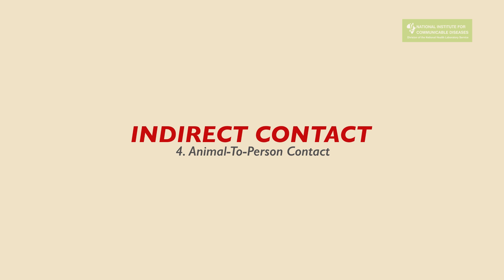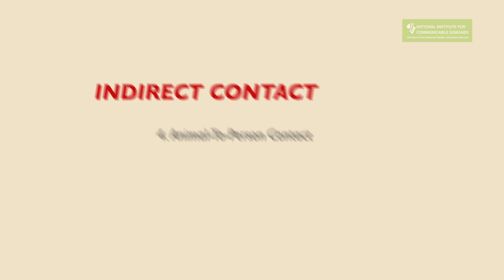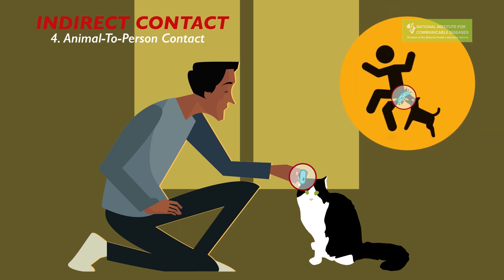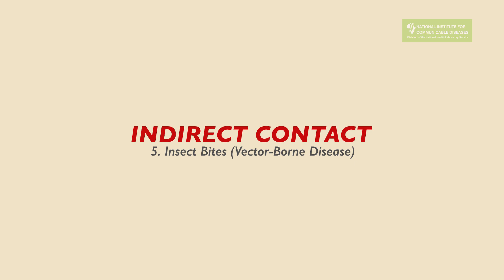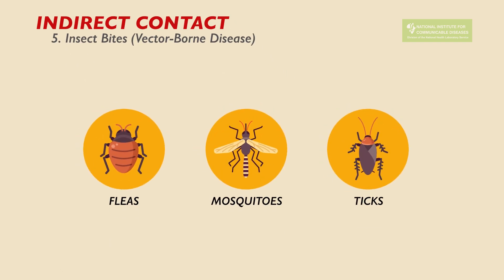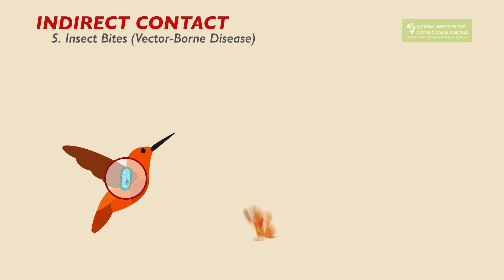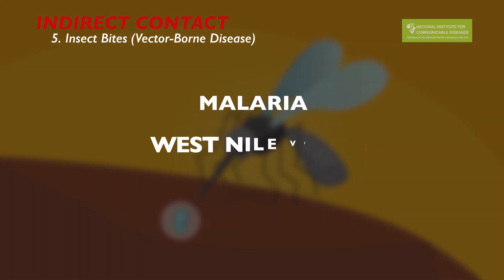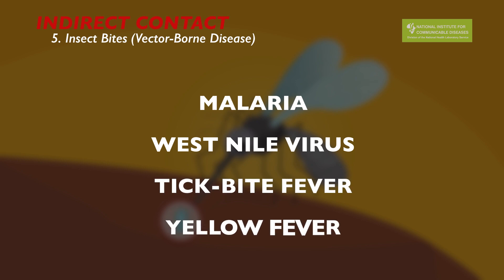Animal-to-person contact: some infectious diseases can be transmitted from an animal to a person. This can happen when an infected animal bites or scratches you, or when you handle cat waste. Some zoonotic infectious agents are transmitted by insects, especially those that suck blood. These include mosquitoes, fleas, and ticks. The insects become infected when they feed on infected hosts such as birds, animals, and humans. The disease is then transmitted when the insect bites a new host. Malaria, West Nile virus, and tick bite fever are all spread this way.